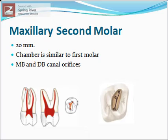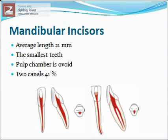The pulp chamber of the maxillary second molar is similar to the maxillary first molar except that it's narrower mesiodistally. The mesiobuccal and distobuccal canal orifices lie very close to each other and sometimes in a straight line. Mandibular incisors: the average length of mandibular incisors is about 21 mm.